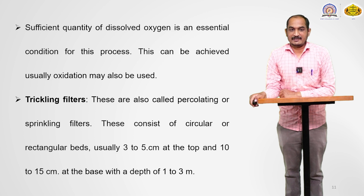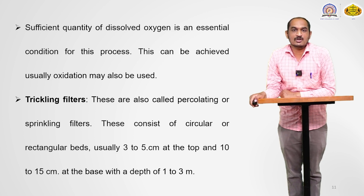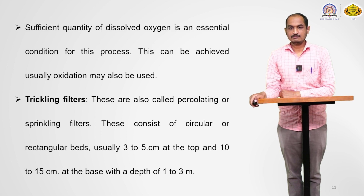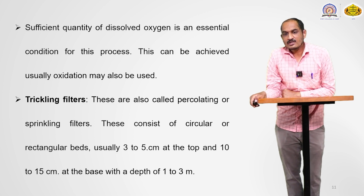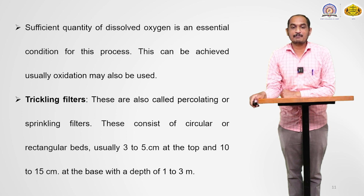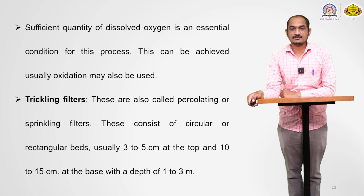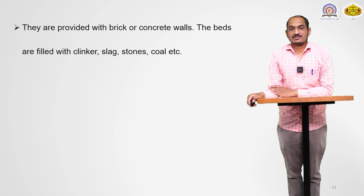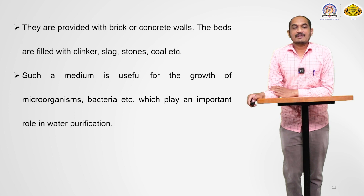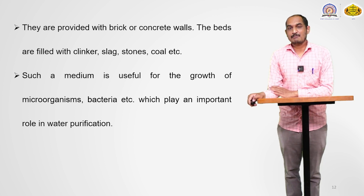The next important point in stage 3 is trickling filters, also called percolating or sprinkling filters. These consist of circular or rectangular beds, usually 3 to 5 centimeters at the top and 10 to 15 centimeters at the base, with a depth of 1 to 3 meters. They are provided with brick or concrete walls, and the beds are filled with clinkers, stones, coal, and similar materials, which serve as a medium useful for the growth of microorganisms and bacteria.